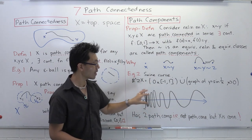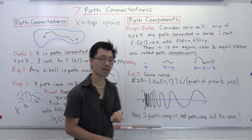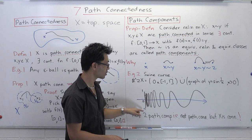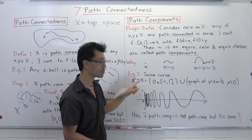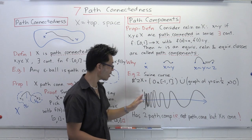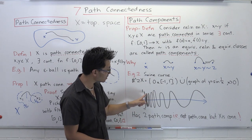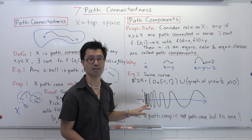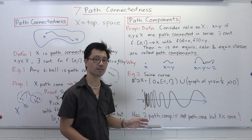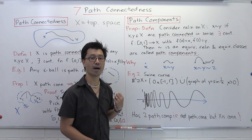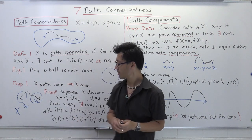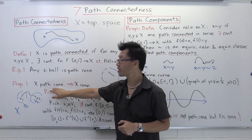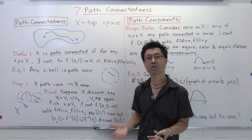So all points in the vertical interval are path connected to each other (one path component), and all points on the curve are in one path component, but you can't path connect a point on the interval to one on the curve. So this space has two separate path components. Yet if you try to show it's disconnected, you'd need disjoint open sets covering each piece separately — but any open set containing the interval must also contain some of the graph of y = sin(1/x), so you can't disconnect this space. Even with two path components, it remains connected. Path connectedness is thus strictly stronger.